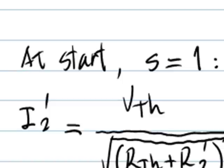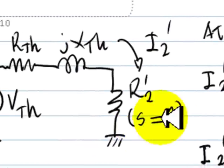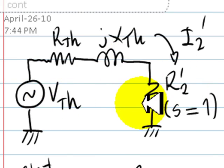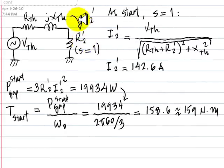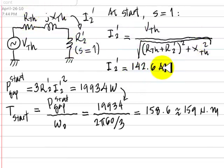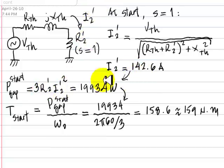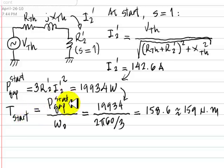For part B, we compute the starting torque. At starting, the slip is 1, and the equivalent circuit seen by the gap power resistor is just R2'. We compute the current as VTh divided by that impedance and determine the absolute value to be 143 amps. With that, we compute the gap power: 3 times R2' times I2' squared. We compute the gap power at the starting point to be roughly 20 kW. Dividing by omega naught, the starting torque is 159 Nm.